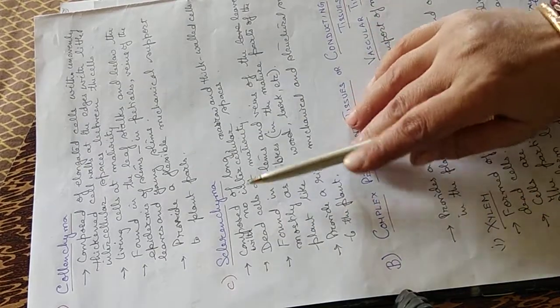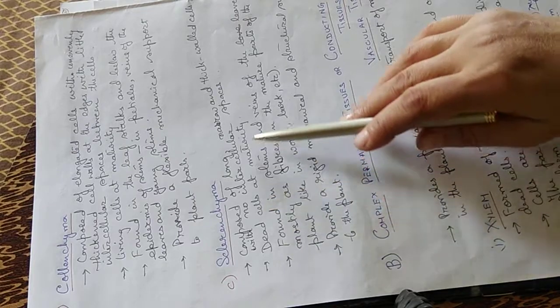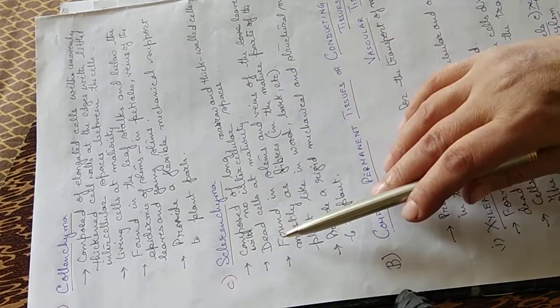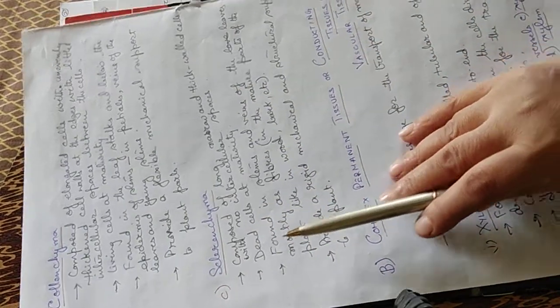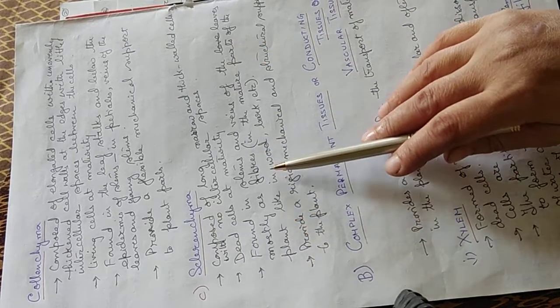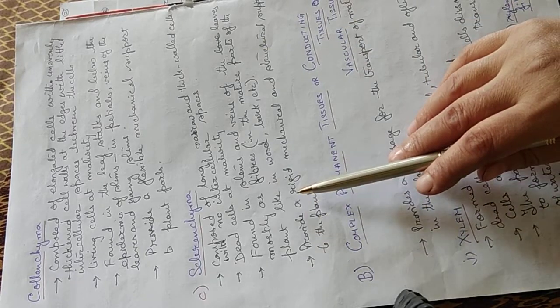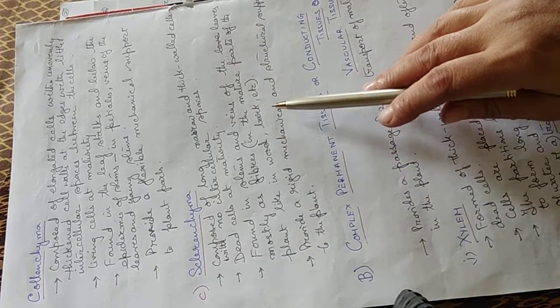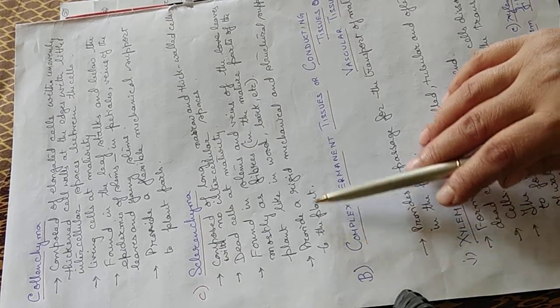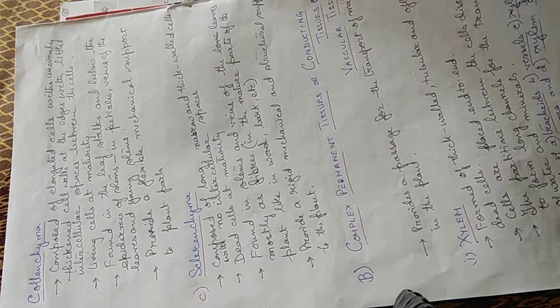Sclerenchyma. They are composed of long, narrow, and thick-walled cells with no intercellular spaces. They are dead cells at maturity. They are found in the stems and veins of the leaves, mostly as fibers, in the matured parts of the plant. They are found in the wood, bark, etc. They provide a rigid, mechanical, and structural support to the plant.